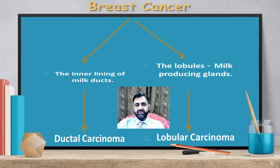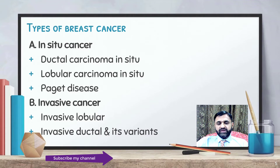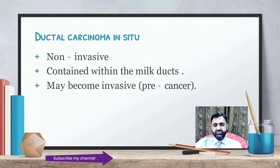Breast cancer. The cancer that arises from the inner lining of the duct is called ductal carcinoma, while the cancer that arises from lobules is labelled as lobular carcinoma. Types of breast cancer: it can be in-situ cancer or invasive cancer. In-situ cancers are ductal carcinoma in-situ, lobular carcinoma in-situ, and Paget's disease. Ductal carcinoma in-situ is non-invasive, contained within the ducts, and may become invasive — it is considered a pre-cancer.